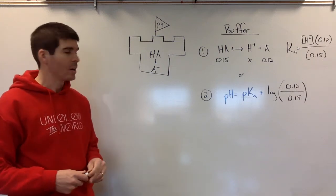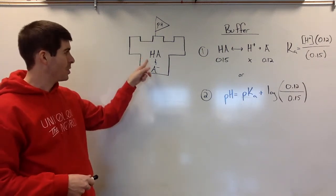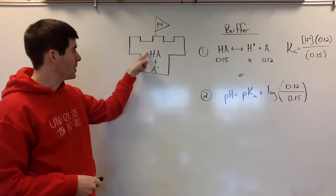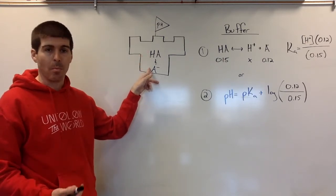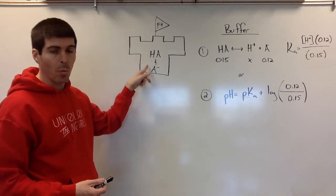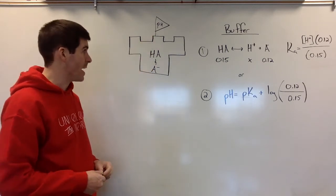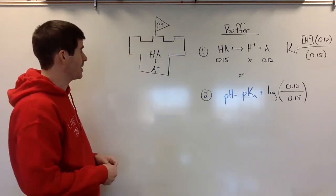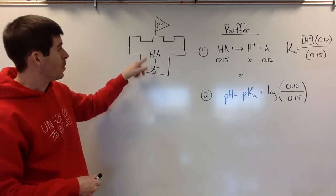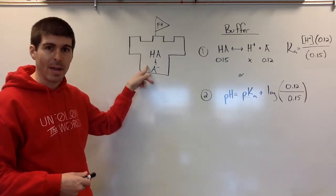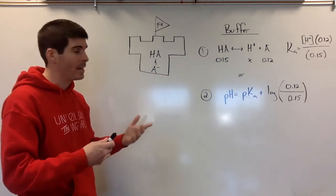When you have a buffer, a buffer is a conjugate pair. One is an acid and one is a conjugate base. Together they work to protect the pH. We've got a castle here where they're trying to protect that system. They don't react with one another because they are a conjugate pair. They're related. They're a team.